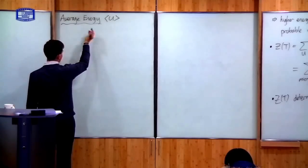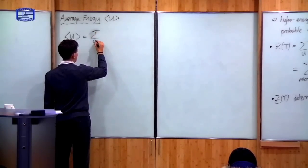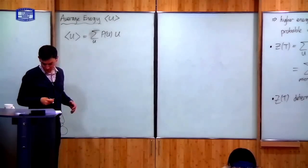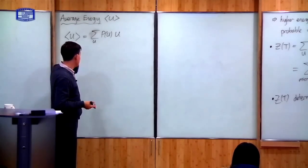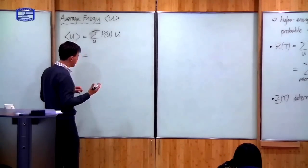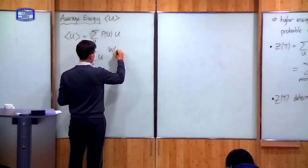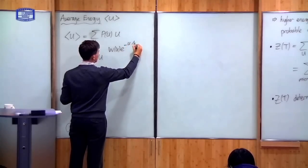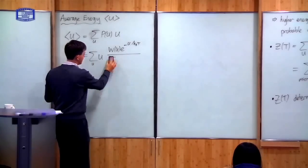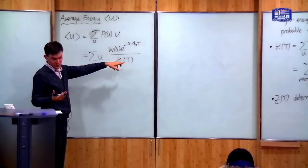So we've seen the formula for mean energy before. The definition of mean is that it's equal to the sum of all possible values of the energy, times the probability of that value multiplied by the value itself. This is the definition of a mean. But now we have a formula for P in terms of the distribution of microstates. If I write this down, this is the sum of U times P of U, where P of U is W of U times e to the minus U over k_B T, divided by the partition function Z.